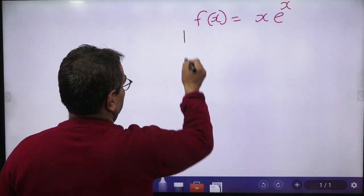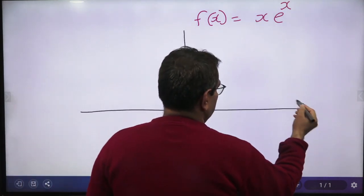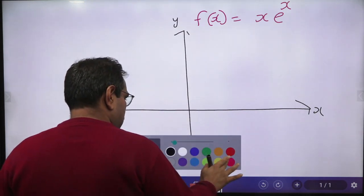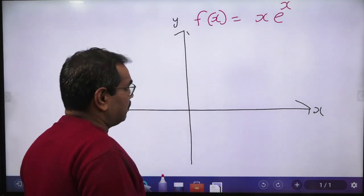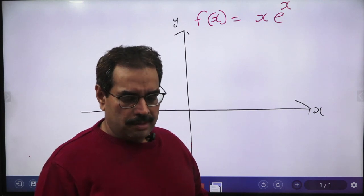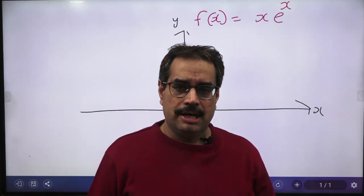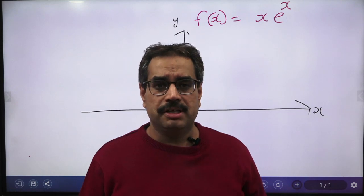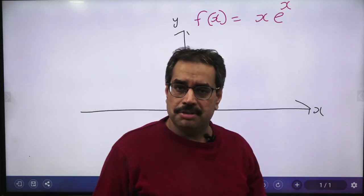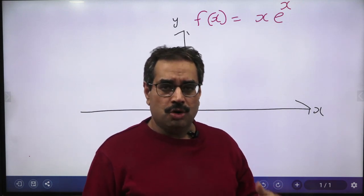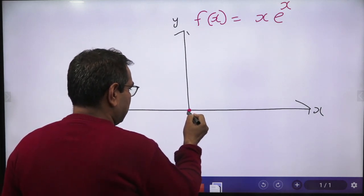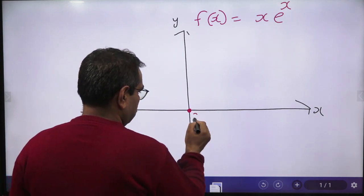First, we draw our coordinate system — the xy-plane. The first thing to check is whether the graph passes through the origin. If you put x = 0 and f(x) becomes 0, then it passes through the origin. Here, f(0) = 0·e⁰ = 0, so y = 0. The graph passes through the origin.